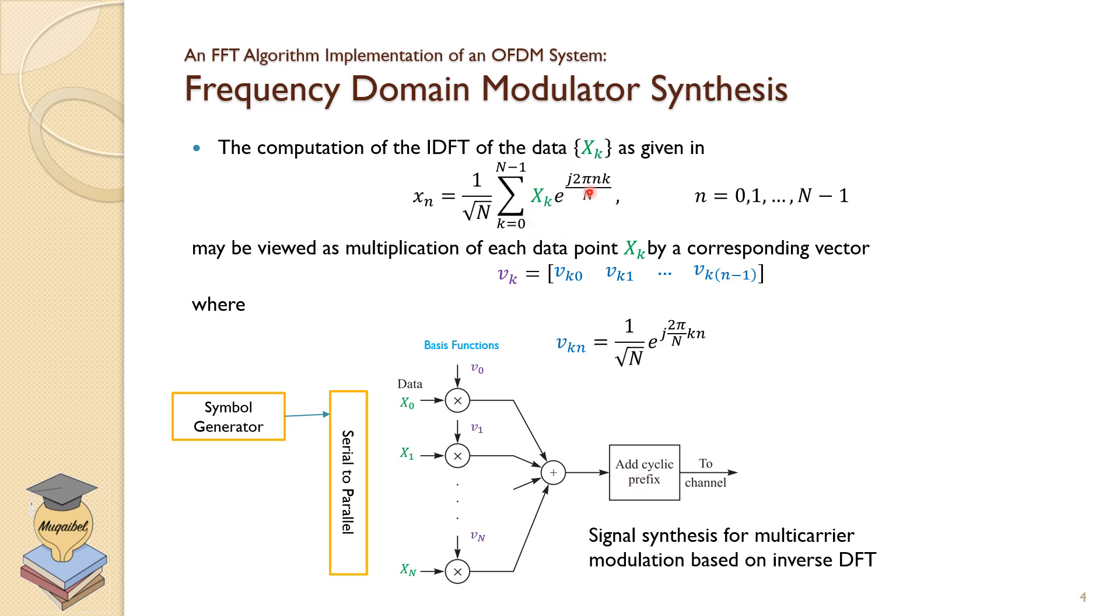If you look at this, we're saying that the computation of the inverse discrete Fourier transform is equivalent to taking the data vector and then multiplying it by the following vector, which is now the carrier vector. Every carrier will have a different frequency, and these frequency bases will be orthogonal.